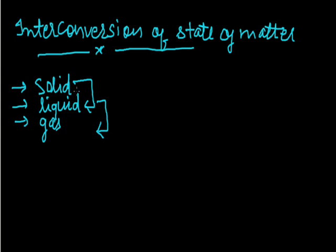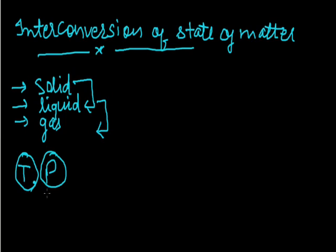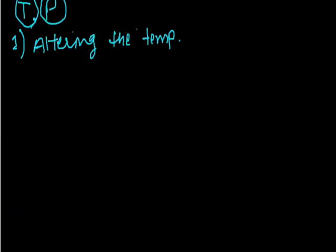The phenomenon of change of matter from one state to another state and back to the original state by altering the conditions of temperature and pressure is called interconversion of states of matter. The various states of matter can be interchanged into one another by altering the conditions of temperature and pressure. We will first take altering the temperature.